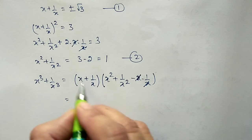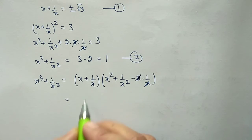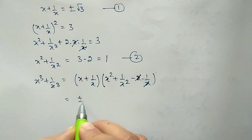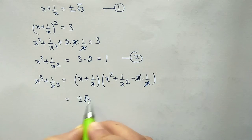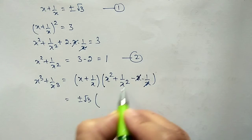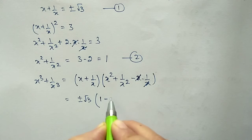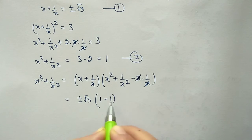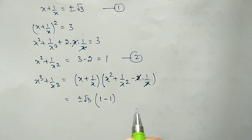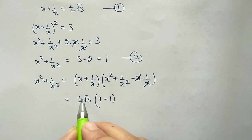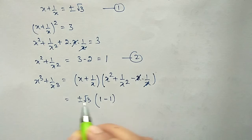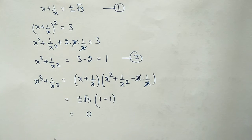Substituting the values: x + 1/x = ±√3, and x² + 1/x² − 1 = 1 − 1 = 0. After multiplication with 0, everything becomes 0, so the answer is 0.